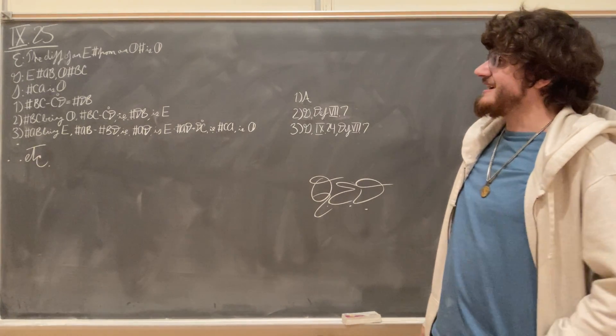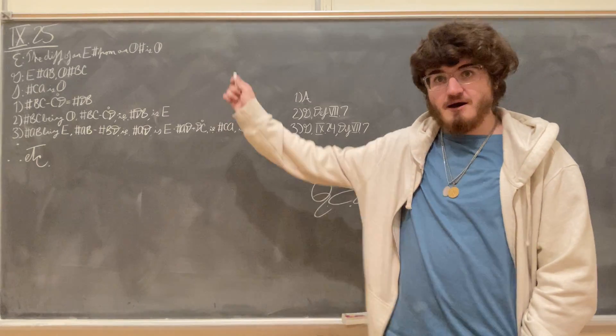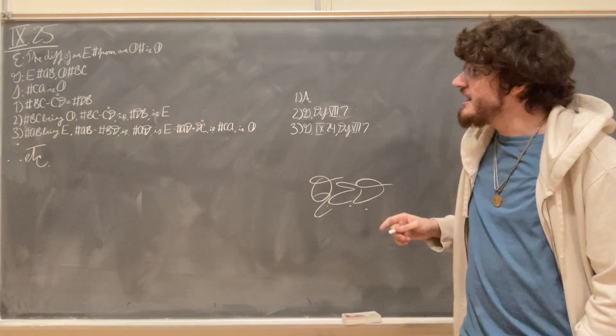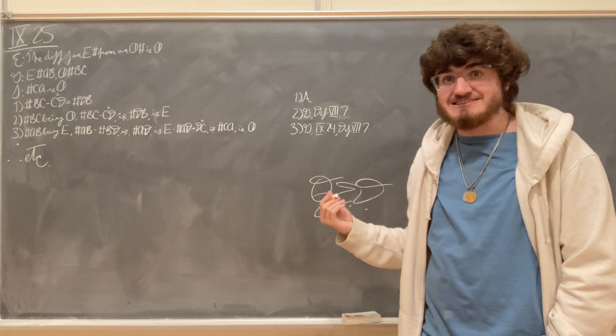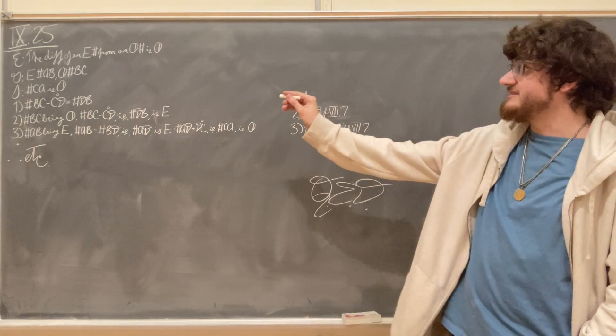We're going to begin by taking a unit away from our number B, C. So we're going to have the number B, C minus the unit C, D makes the number D, B.